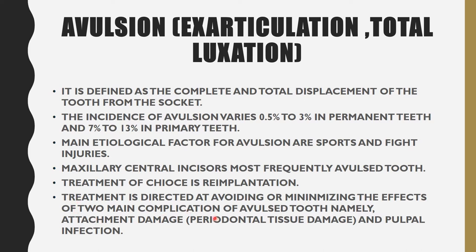The treatment is directed at avoiding or minimizing the effects of two main complications. First is attachment damage — since the tooth is completely out of the socket, the periodontal tissue can get damaged. Second is pulp infection. Treatment should be directed at avoiding or minimizing these two effects.